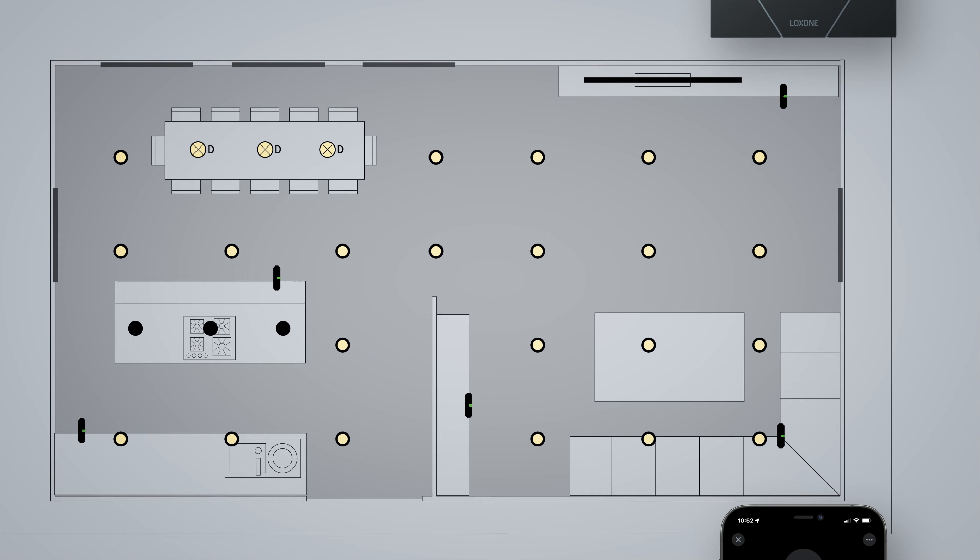In our example there are various light circuits, which in a conventional installation could be on and off in countless combinations. Controlling all of these lighting circuits individually from a bank of switches on the wall would be, at the very least, confusing. This is why we recommend working with a range of lighting moods the customer will commonly use in that room or space.